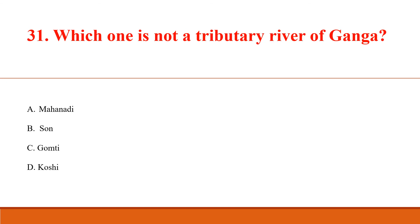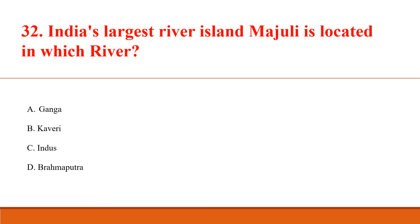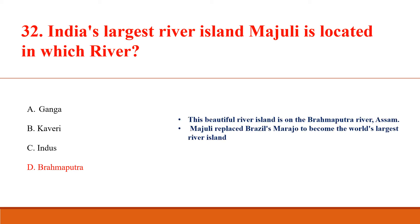Which one is not a tributary river of Ganga? Answer A: Mahanadi. India's largest river island, Majuli, is located in which river? Answer D: Brahmaputra. This beautiful river island is on the Brahmaputra river, Assam. Majuli replaced Brazil's Marajó to become the world's largest river island.